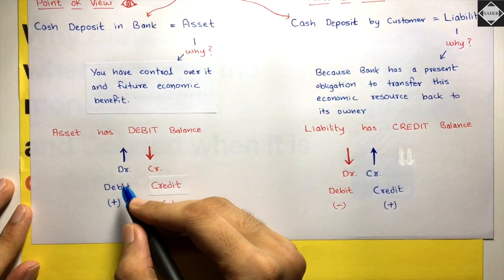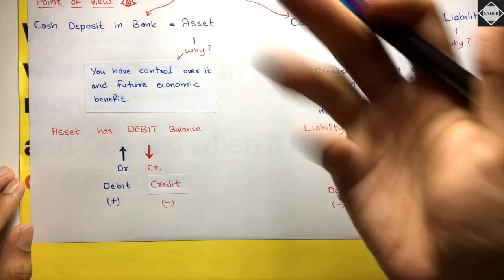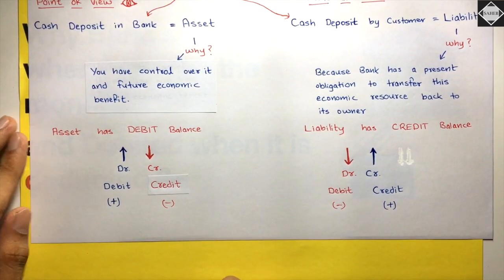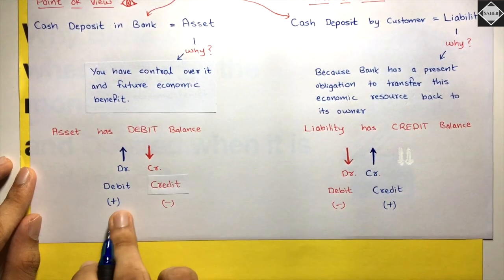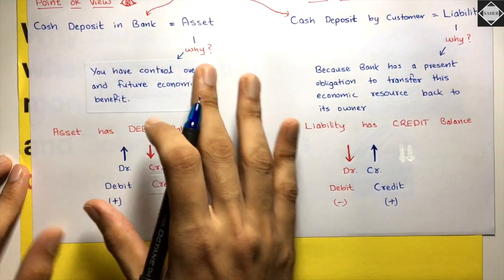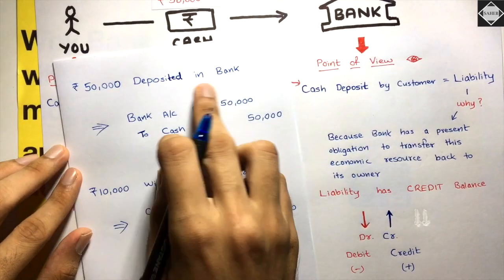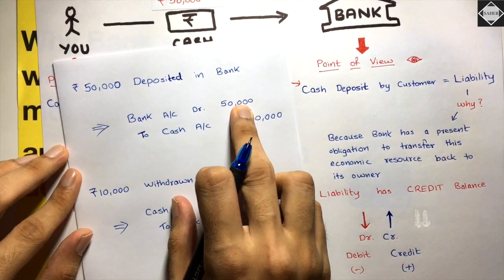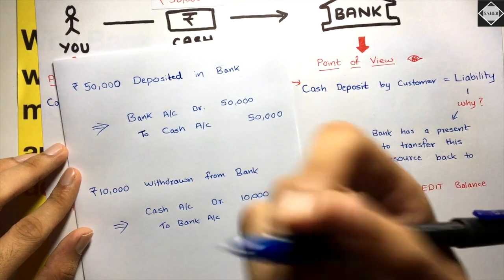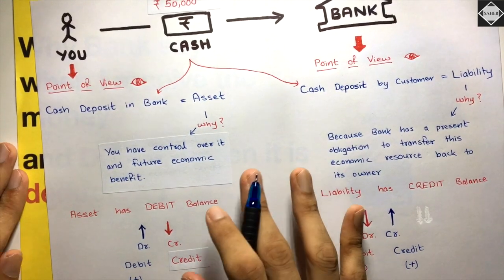Since the bank account is an asset with a debit balance, whenever it increases you debit it, and whenever it decreases you credit it. So the journal entry is: Bank Account debit 50,000, Cash Account credit 50,000. That's from your point of view — because the bank account is an asset that has increased.